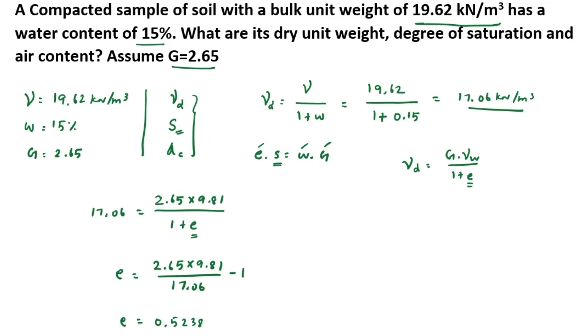0.5238 times S equals 0.15 times 2.65. From that, S equals 0.15 times 2.65 divided by 0.5238. We got the value S equal to 0.62, that is 62 percentage.